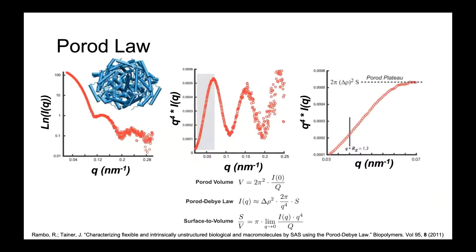Another transform is Porod's law. Using a protein ensemble as an example — take the intensity, multiply it by Q⁴, and plot that against Q itself. You get a curve with various peaks which you can fit using Porod's law. This gives you the Porod invariant Q*, providing significant surface information as well as surface-to-volume information. This is very useful for proteins or catalysis, where surface studies are significantly more important.